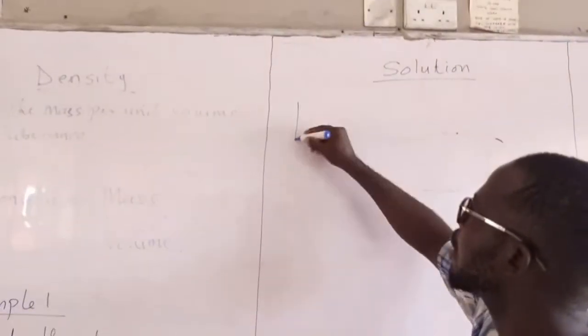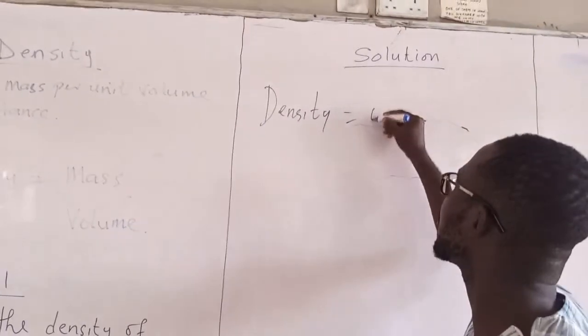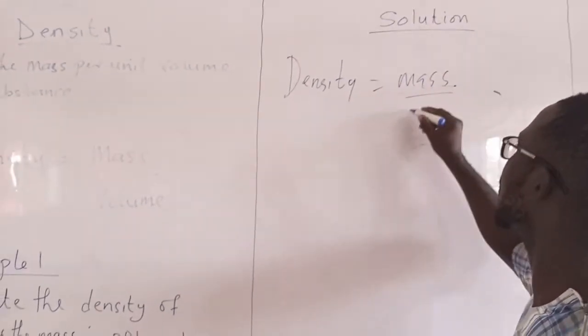So our mass, let's write our formula. Density equals mass over volume.